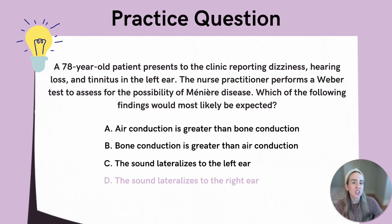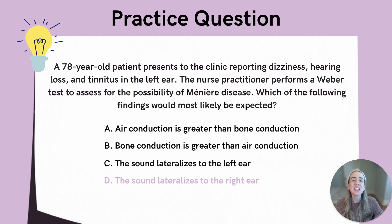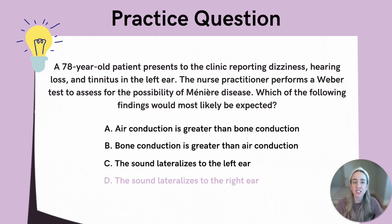Let's take a look at those incorrect answer choices. Option A: air conduction is greater than bone conduction — this would be the expected finding during the Rinne test in patients with normal hearing, but is not at all related to the Weber test, so we can immediately rule out this option. Option B: bone conduction is greater than air conduction — this would suggest conductive hearing loss during the Rinne test, not the Weber test, so this answer can also be ruled out. Option C: the sound lateralizes to the left ear — this would suggest conductive hearing loss in the left ear, but we know that Meniere disease causes sensorineural hearing loss, making this option incorrect.